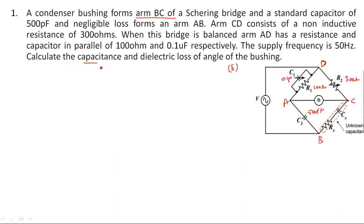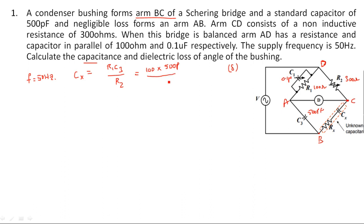One more arm has a parallel capacitance of 0.1 microfarad in parallel with a resistance of 100 ohms. Frequency is given as 50 Hz. The formula for Cx is R1·C3 / R2. Substituting: R1 is 100 ohms, C3 is 500 picofarads, R2 is 300 ohms. So 500 divided by 3 gives approximately 166 picofarads. This is the value of the unknown capacitance Cx.